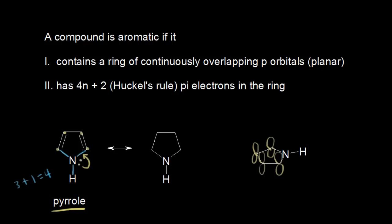If those lone pairs of electrons move into there to form a pi bond, that would kick these electrons off onto this carbon. So the resonance structure will have nitrogen with a pi bond here now, and a lone pair of electrons on this carbon, which would give this carbon a negative 1 formal charge. We still have a pi bond over here, and this nitrogen now would have a plus 1 formal charge. When we analyze the hybridization state of this nitrogen, we count three sigma bonds, and this time no lone pairs of electrons, because that lone pair of electrons is now delocalized in resonance.